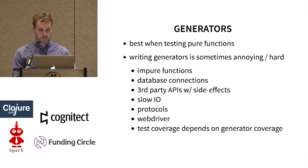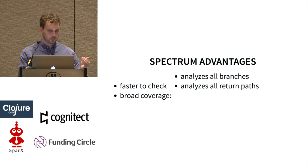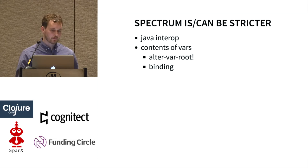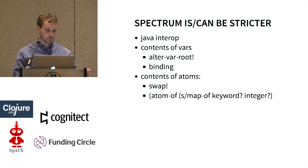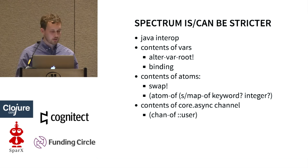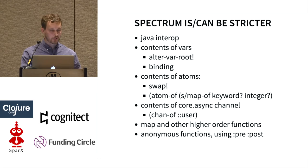Spectrum tradeoffs and advantages: it's faster than generative testing, it has broad coverage — it'll analyze every branch of your function, analyze all return paths, and check all protocols are used correctly. It can be more strict: check Java interop, check the contents of vars with alter-var-root and binding, check the contents of atoms like swap, write a spec for 'this is an atom of a map to a keyword to an int,' and check contents of core.async channels. The Java interop stuff works; the others are speculative but could work. Map and higher-order functions work, and I'll show an example.